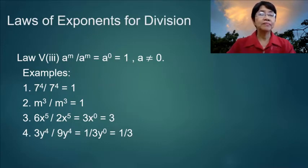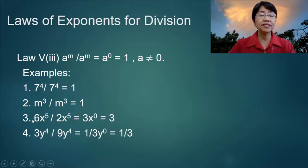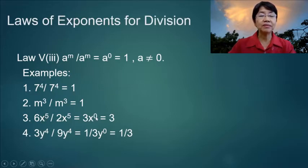Examples. Number 1: 7 to the 4th over 7 to the 4th is equal to 1. Number 2: m cubed over m cubed is equal to 1. And number 3: if there are numerical coefficients, you first divide them — 6 divided by 2 is equal to 3 — and then divide out the variables, so you have x to the 0, giving simply 3.